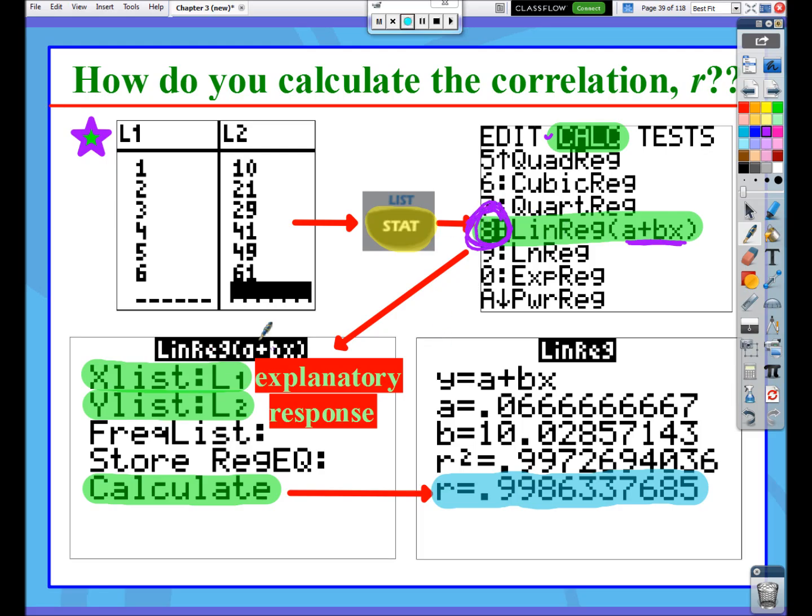Once you select that, and if you have a newer calculator, this is what you'll see. X List, that's going to be our explanatory. Y List is our response. So that kind of looks like when we set up a scatter plot earlier. And then if you leave Frequency List, just leave it blank. Store Regression Equation, leave it blank for now. And just go to Calculate. And then it's going to do this.